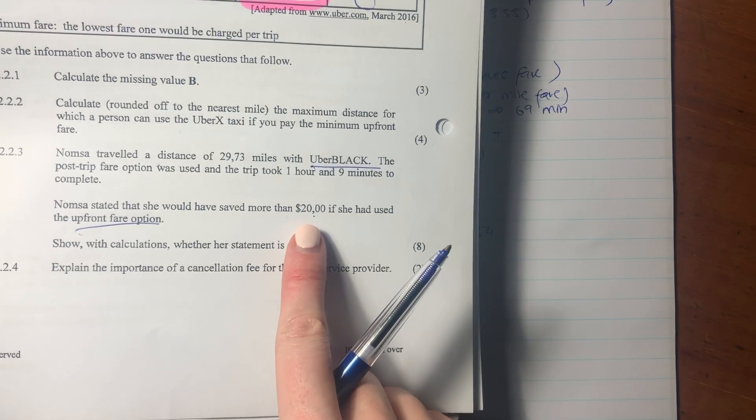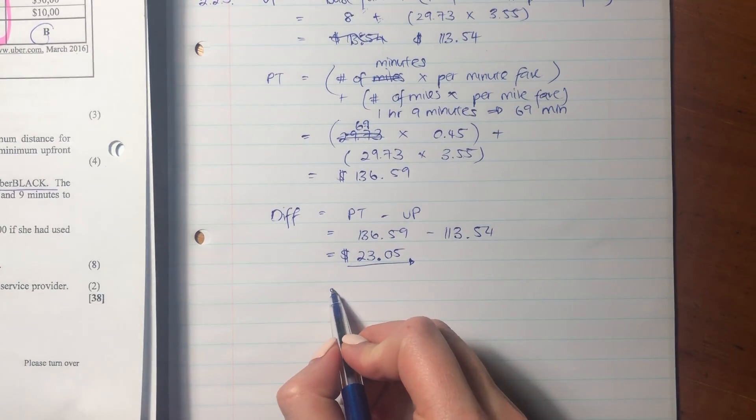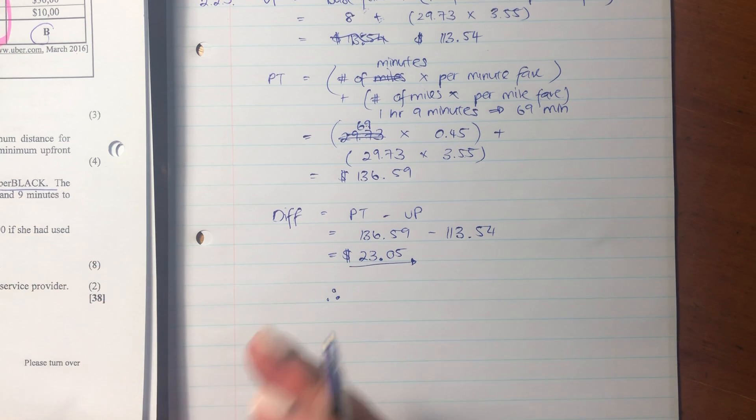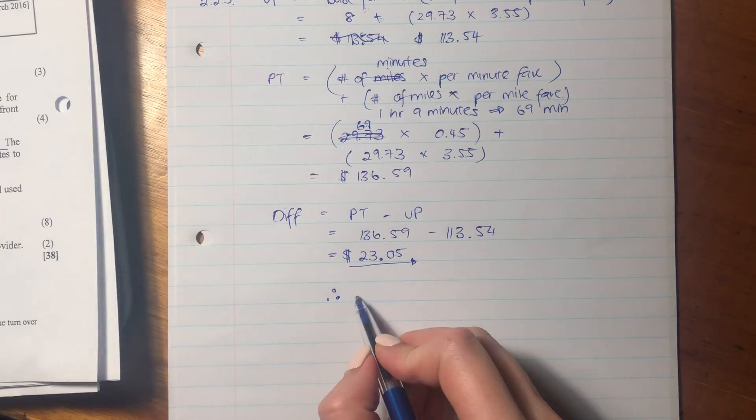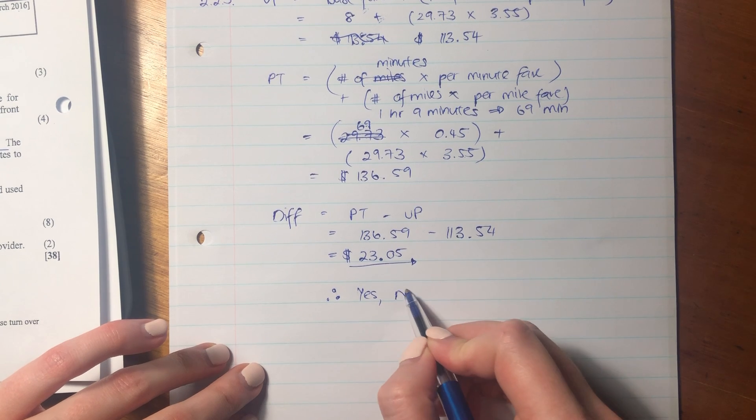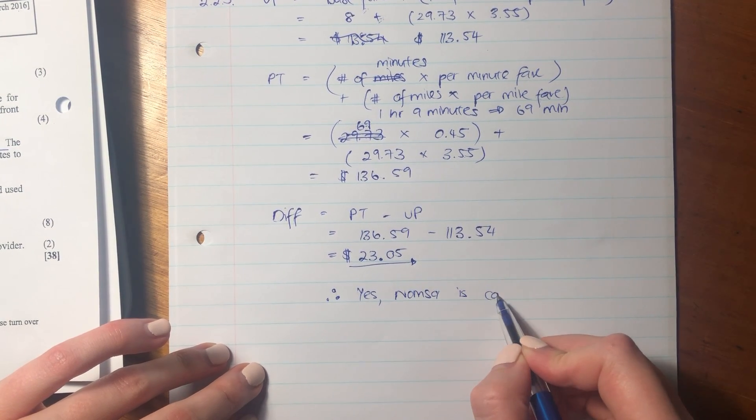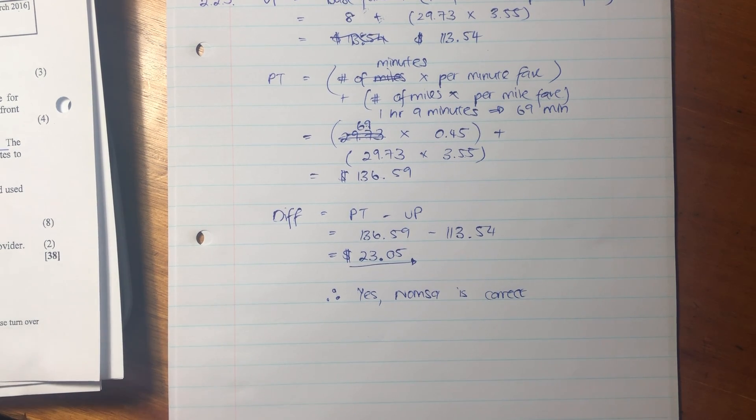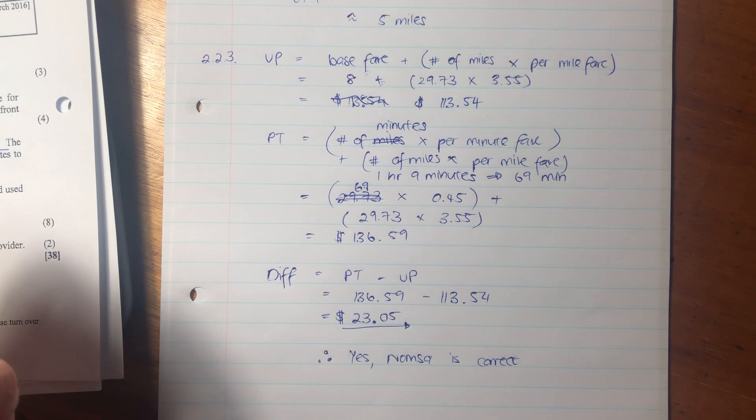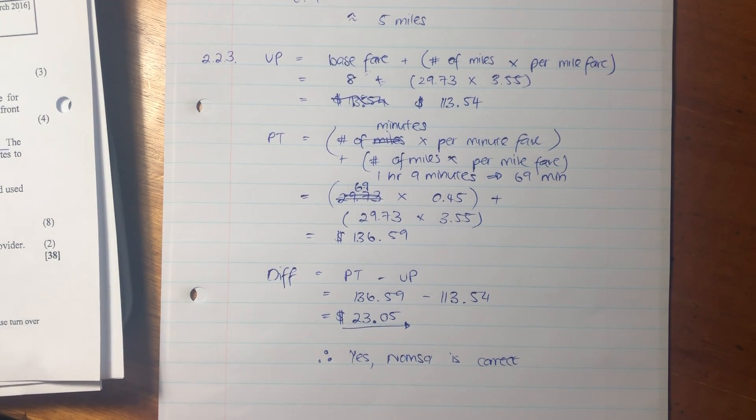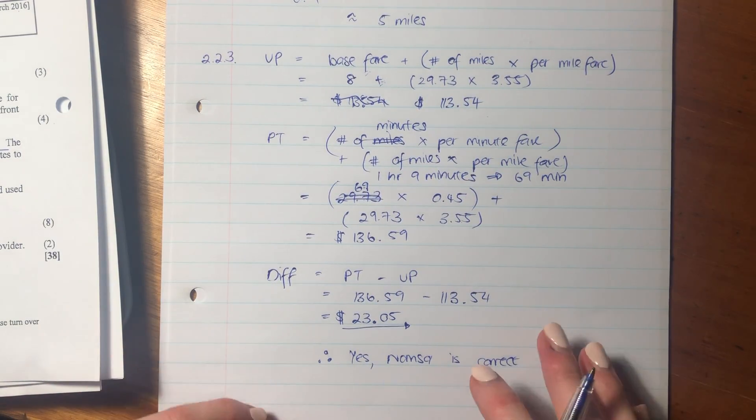So our conclusion, and this is important. Often students forget to do this. They do all the calculations and they forget to answer the question. The question says state whether she's correct. So we say yes, Normsa is correct. So it's important to make sure you answer the question because in math lit, what's actually really cool about math lit is it's quite practical. So make sure that you always remember that you're doing a practical scenario and that you must then give insight from the math into whether your answer is right or wrong or whether the person's insight is right or wrong.